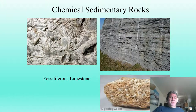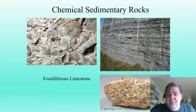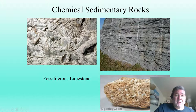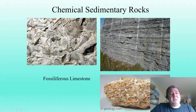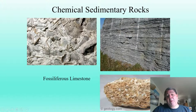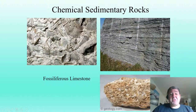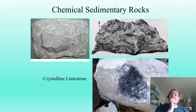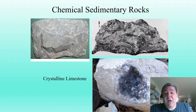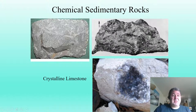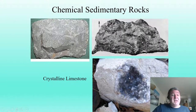Looking at some examples: fossiliferous limestone contains visible fossils — seashells, bryozoans — indicating coral reef or nearshore marine environments. There's also coquina (C-O-Q-U-I-N-A), made of almost entirely cemented seashells; it's very porous and water pours almost right through it. Then there's crystalline limestone, precipitated inorganically through supersaturation — a solid chunk still made of calcium carbonate, so it's softer than glass and will fizz in acid.